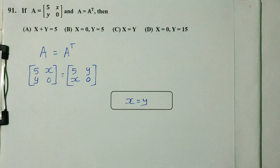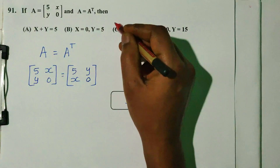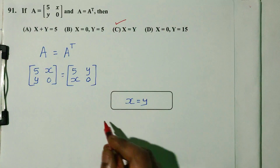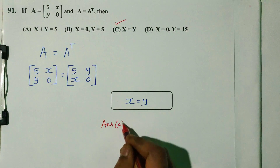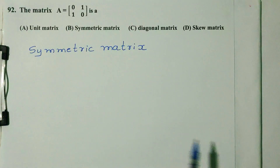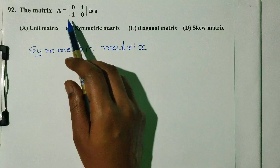So option C is the right answer. Question number 92: the matrix A equal to [0, 1; 1, 0].